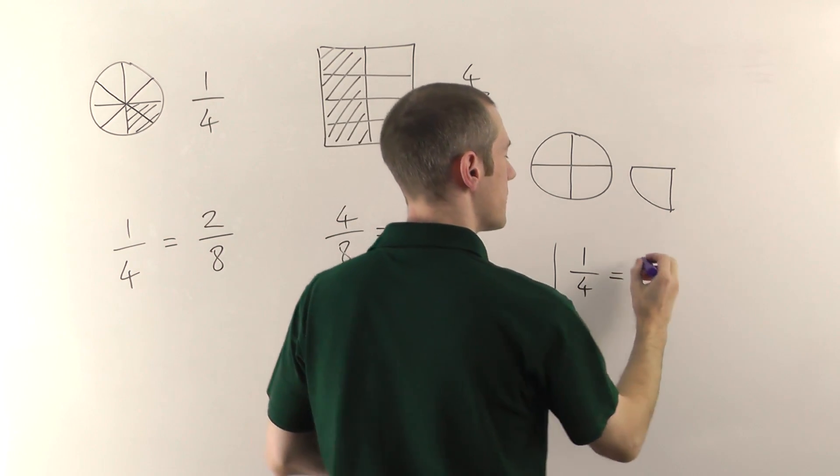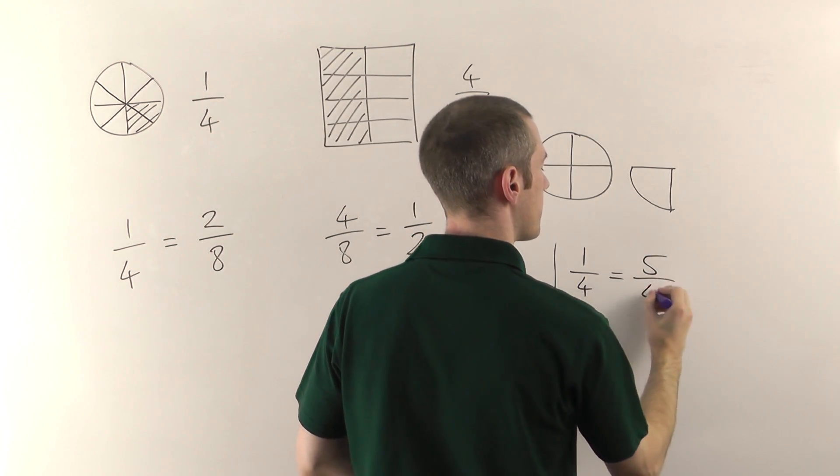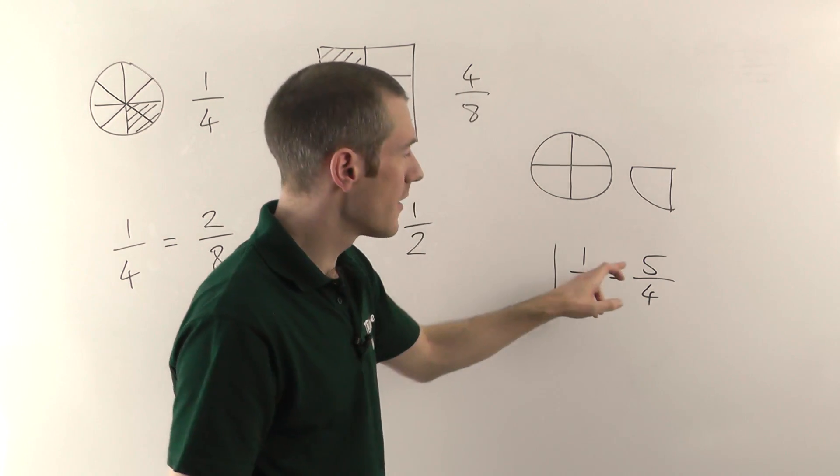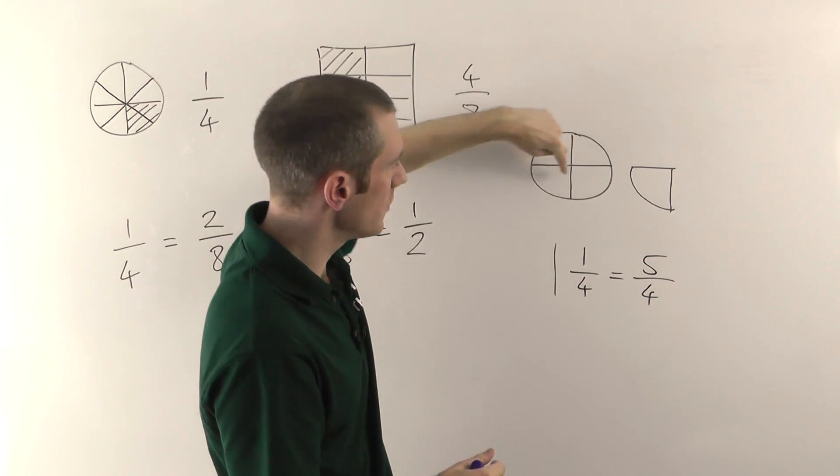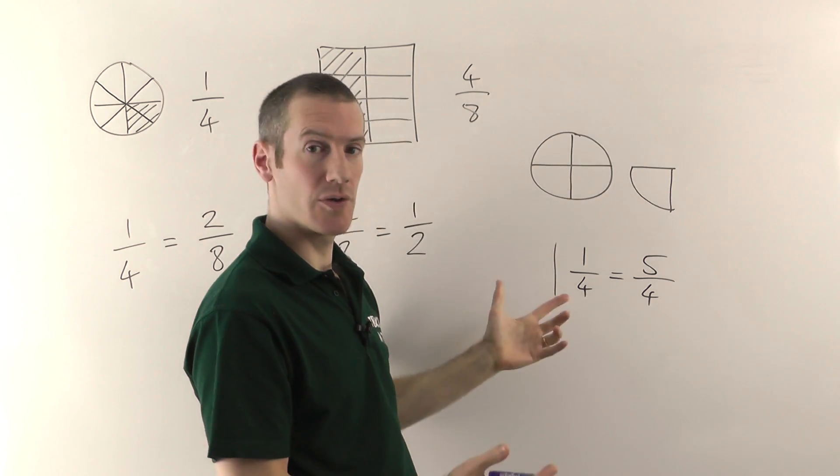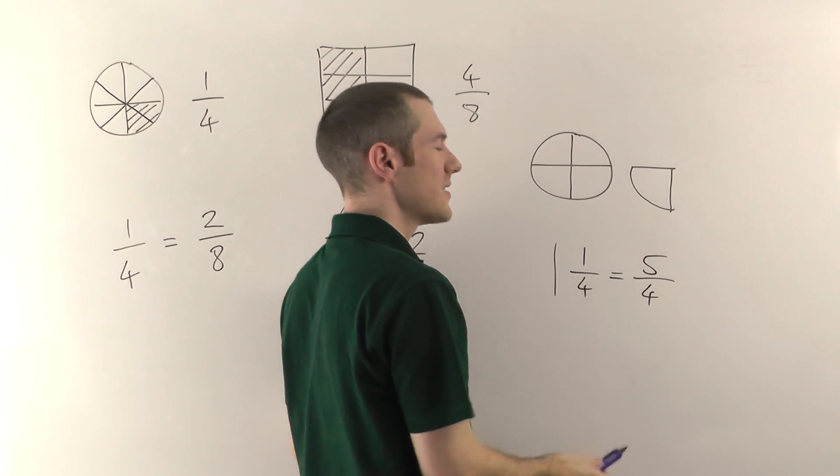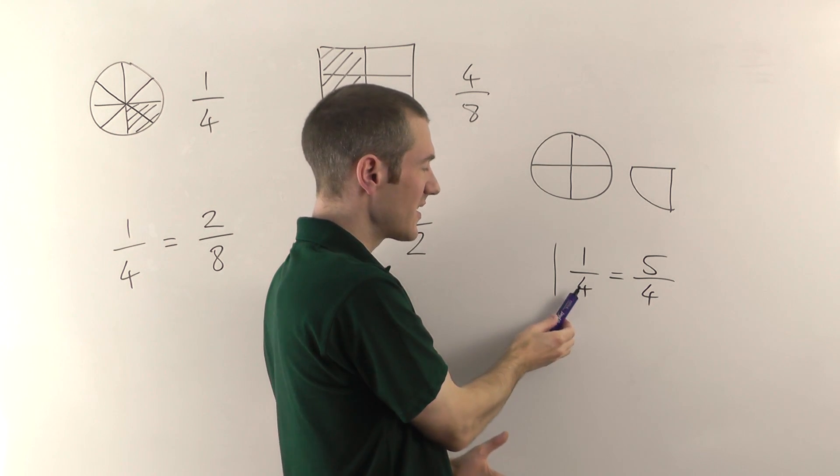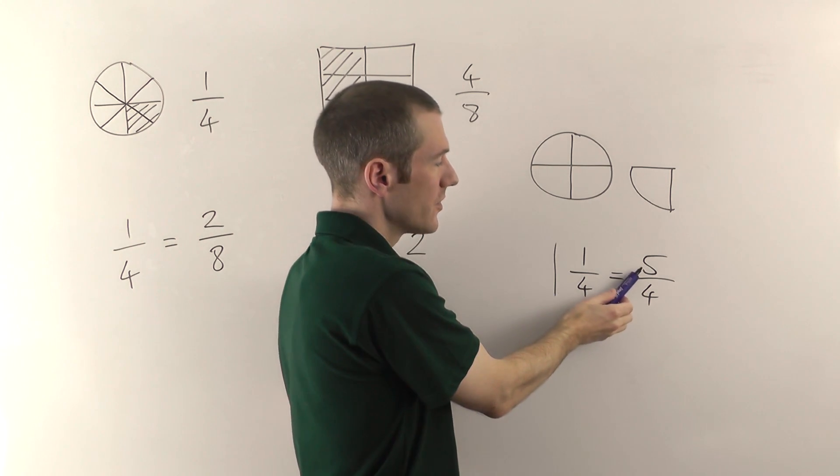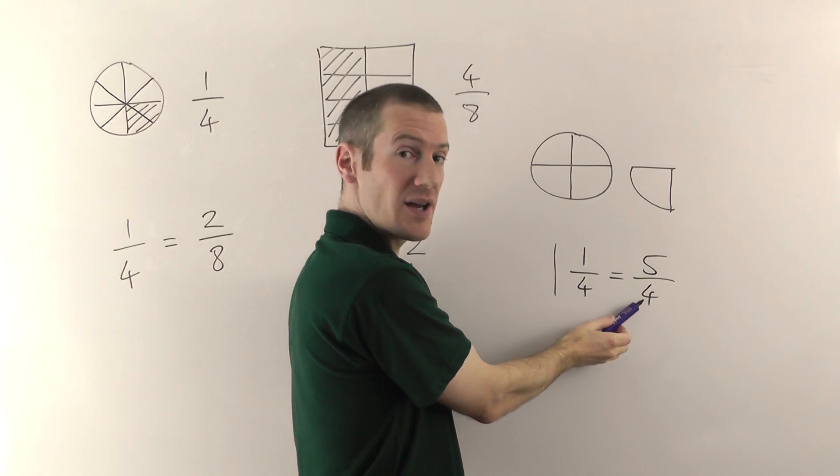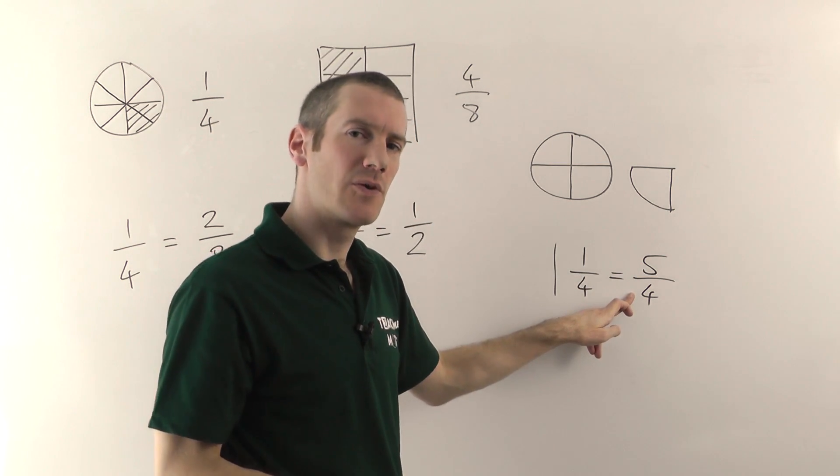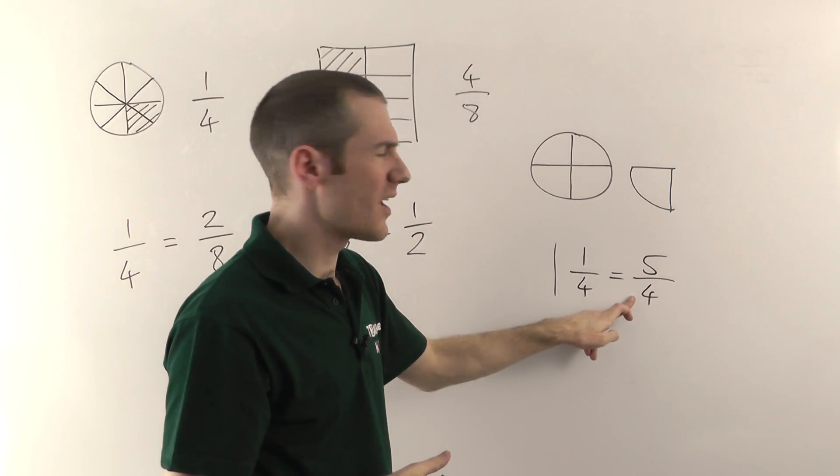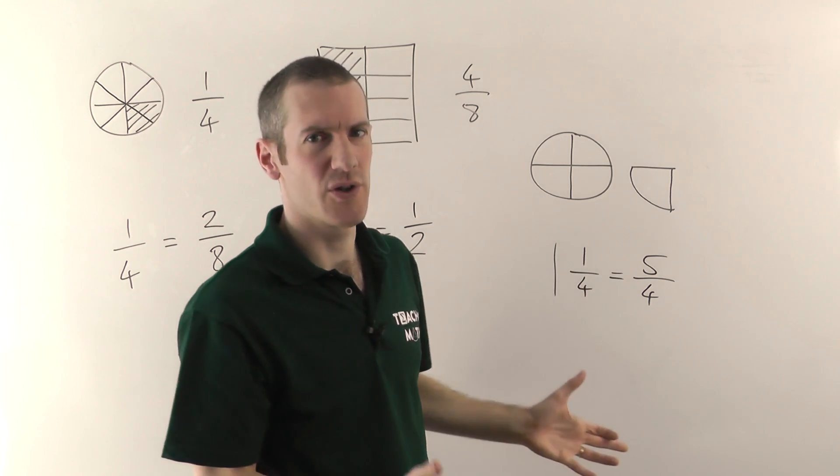A top heavy fraction would look like this. One and a quarter is the same as five quarters. You can see looking at the picture here, you've got one, two, three, four, five quarters. Five quarters. So these two things are the same. And this is just another way of writing this. These are exactly the same. The number on the top though, you notice, is bigger than the number on the bottom. So we call this a top heavy fraction. Sometimes people call these improper fractions. I prefer top heavy because it's a bit more obvious what's going on there.